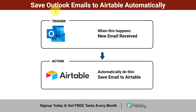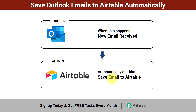In this video, I will show you how to save your important Outlook emails to Airtable automatically. I'm going to automate this process by integrating Outlook and Airtable with the help of an automation software. Every time a new email is received, the same email along with all details — subject line, body, date, sender name, email address, and more — will be saved automatically into Airtable. Any non-technical person can create this automation very easily.